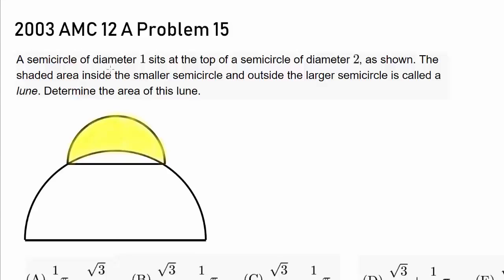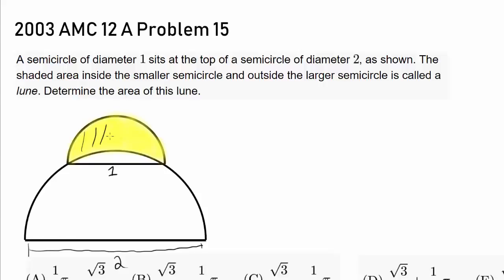A semicircle of diameter 1 sits at the top of a semicircle of diameter 2. The smaller semicircle has a diameter of 1 and the larger semicircle has a diameter of 2. The shaded area inside the smaller semicircle and outside the larger semicircle is called a lune. We want to determine the area of this lune.